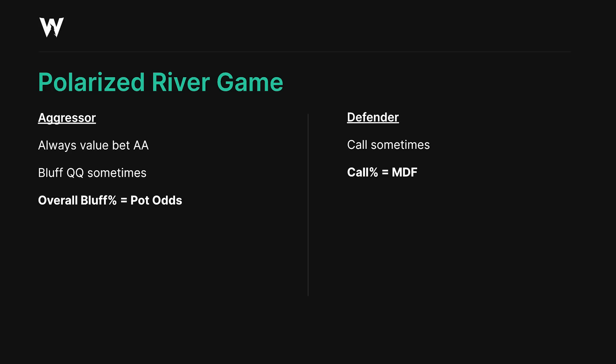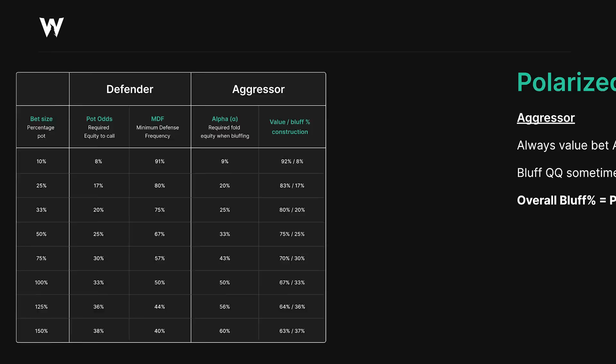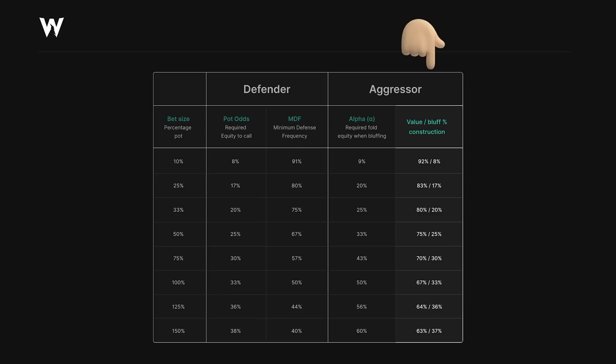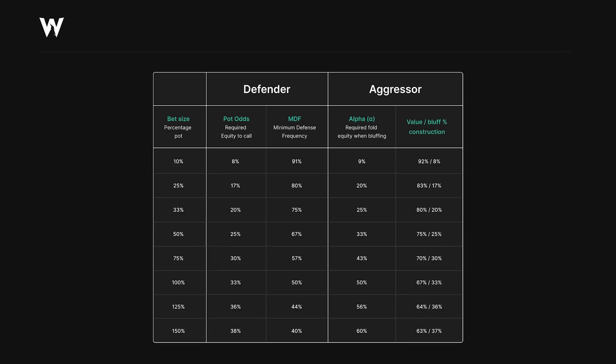The correct bluff percentage on the river is always equal to the pot odds laid. In this example we're betting half pot, so villain is getting pot odds of 25% — they need at least 25% equity to break even after calling. If we bluff less than 25%, they can always fold; if we bluff more than 25%, they should always call. A simple way to apply this is to use a pot odds chart showing bet size as a percentage of the pot on the left, and the value-to-bluff construction on the right. For a half-pot bet, 75% of our betting range should be value and 25% should be bluffs.